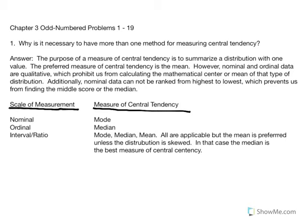Additionally, nominal data cannot be ranked from highest to lowest, which prevents us from finding the middle score or the median. The scales of measurement and applicable measures of central tendency are: nominal data — we can only report the mode, the most frequently occurring score. Ordinal data — we can rank values and find the center value to report the median. Interval and ratio scales enable us to report the mode, median, and mean.